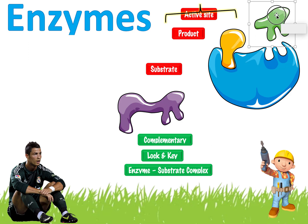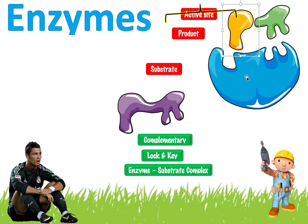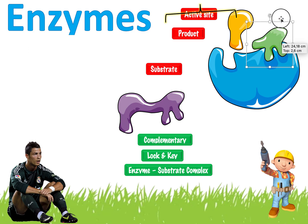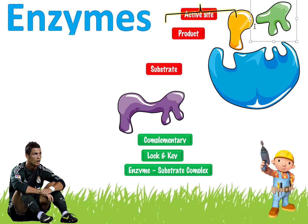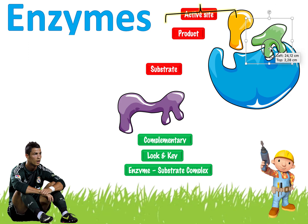Lock and key: the enzyme has a specific shape and this shape is specifically made to interact with only these substrates. It has a unique shape for a unique job — this lock is specifically made for these keys, it fits exactly. That's the lock and key model. And complementary: this enzyme has a complementary structure to these substrates, meaning they work very well together because they fit really well together — they are complementary.